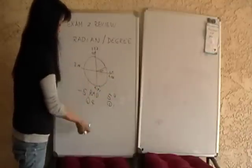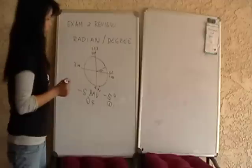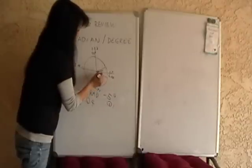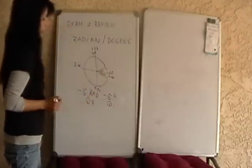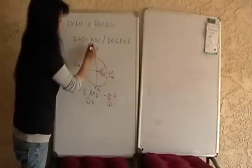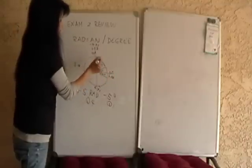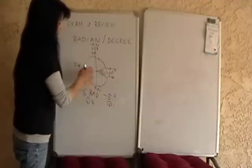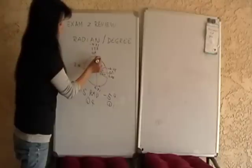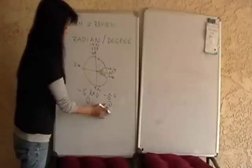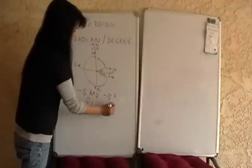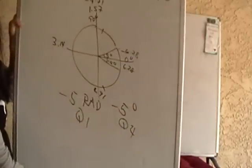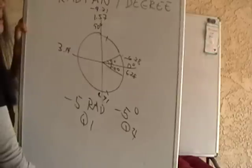So if this had been negative 5 radians and negative 5 degrees: negative 5 degrees will be down here. And negative 5 radians — this is going to be negative 4.71 and this is negative 6.28 — so negative 5 radians will be here, in quadrant 1. If we switch it, that becomes quadrant 1, and this becomes quadrant 4. That's how you find your radians and degree measures.